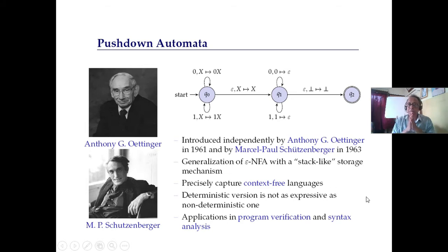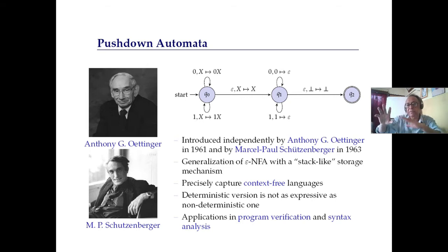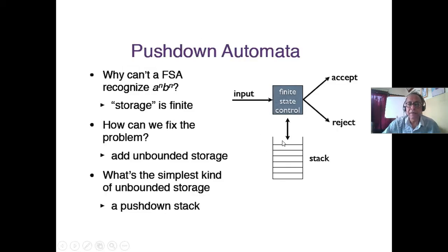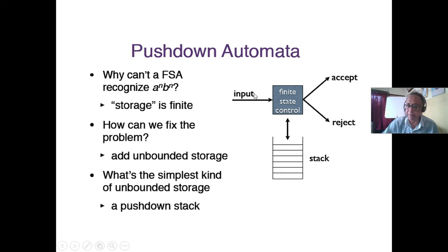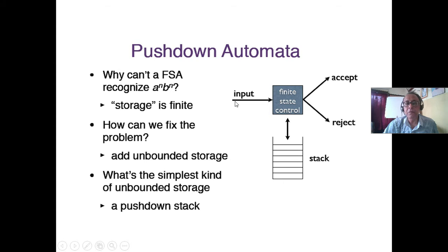Every context-free grammar can be identified with a pushdown machine — they are equivalent. Any context-free grammar has an equivalent pushdown automaton and vice versa. Similarly, one finite state machine maps to one regular language — it is one-to-one. The pushdown automaton uses a stack; input alphabet is typically sigma and stack alphabet is gamma, with end-of-stack marker z0.